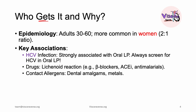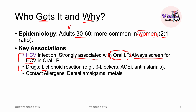Who gets lichen planus, and why do they develop it? Lichen planus typically affects patients between the ages of 30 and 60, and is more common in women with a two-to-one ratio. The key associations involve hepatitis C virus, strongly associated with oral lichen planus — always screen for HCV whenever you see oral lichen planus. Drugs can cause a lichenoid reaction; important drugs include beta blockers, ACE inhibitors, and antimalarials. Contact allergens including dental amalgams and some metals are also implicated.